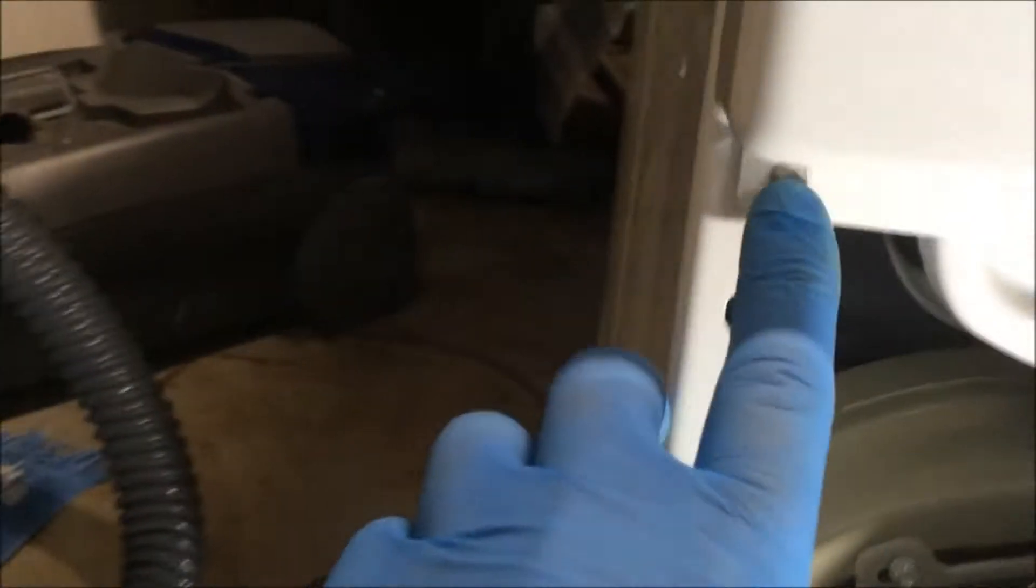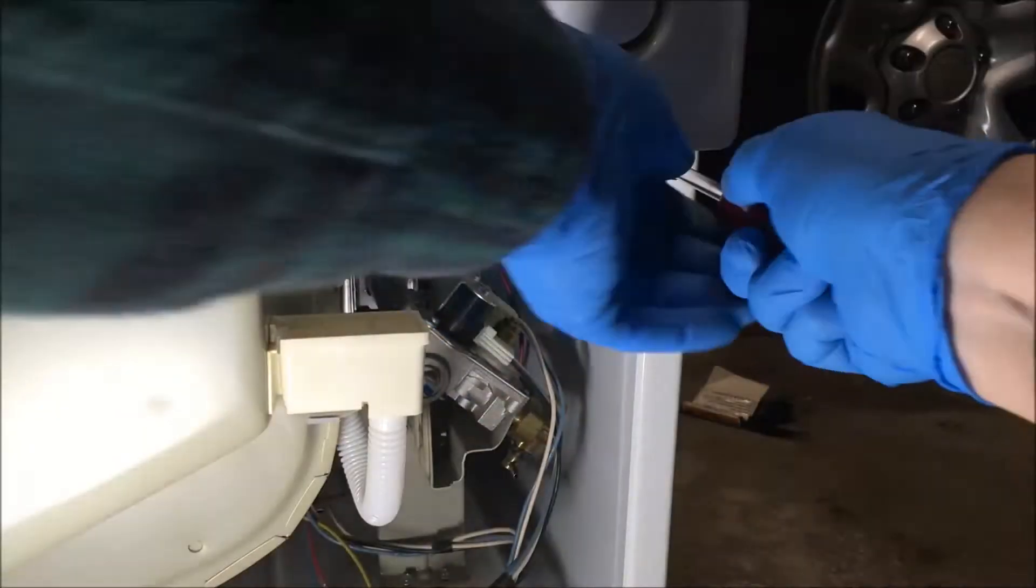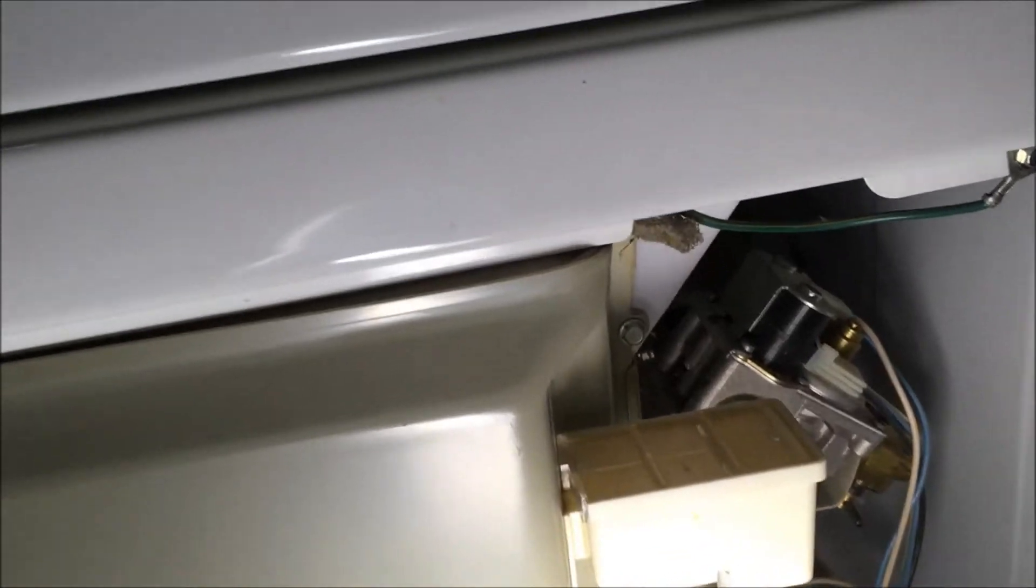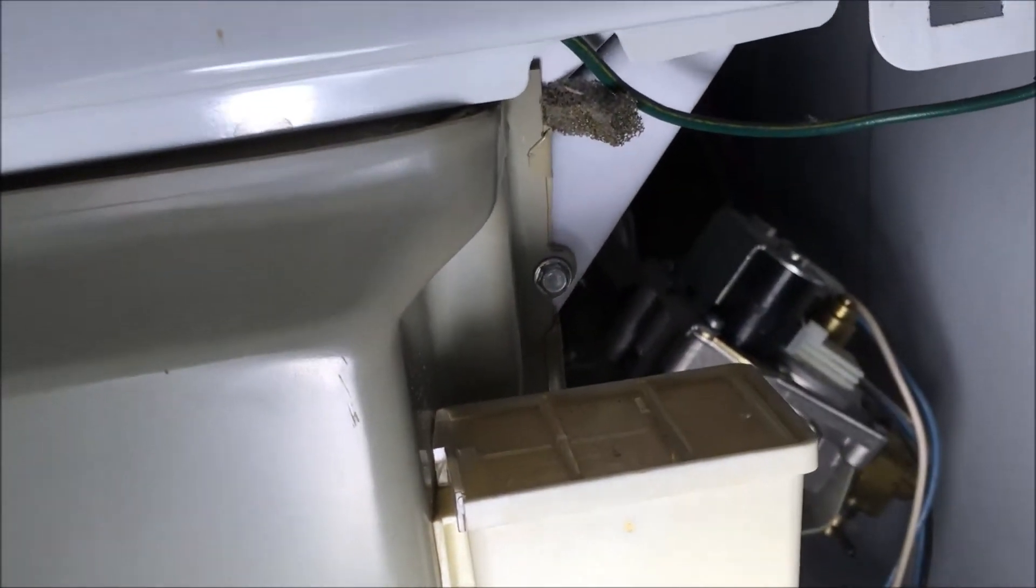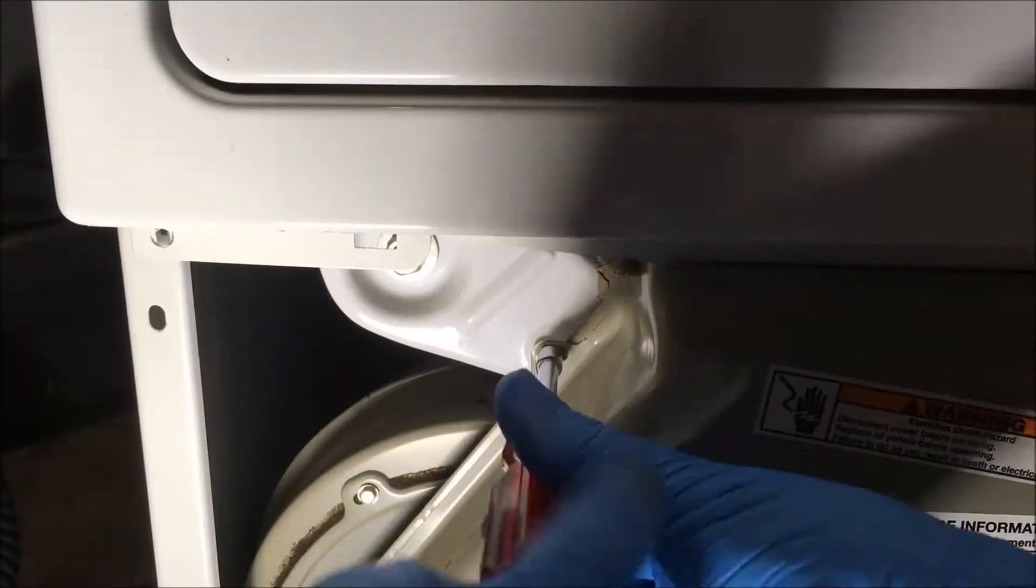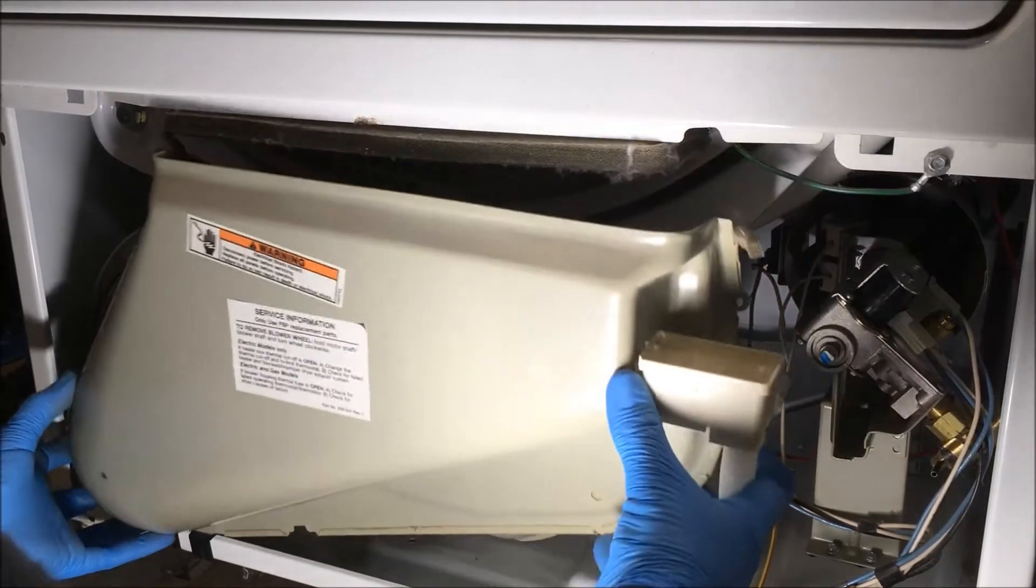Now you're going to remove two screws for the upper panel. That's one, the other one's over here. This is the lint screen duct. You'll have two screws to remove, that one and that one. Once you remove those two screws, the lint screen duct comes right off.